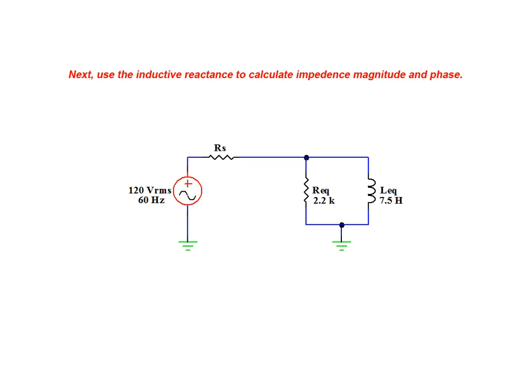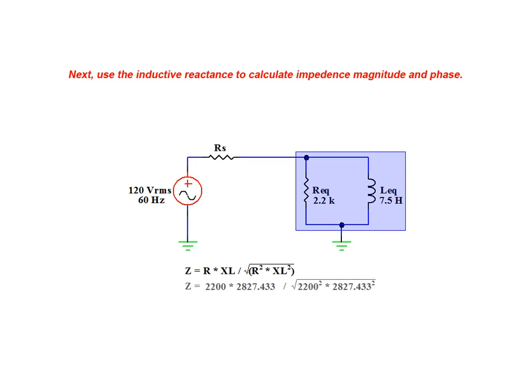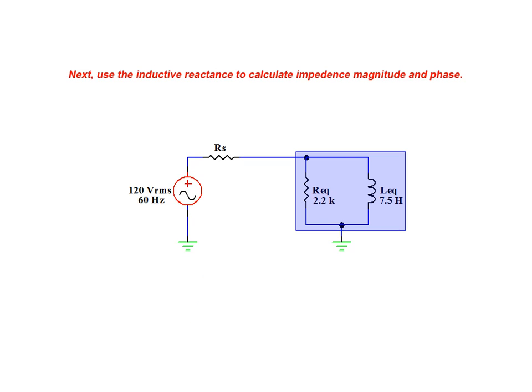Next we use the inductive reactance to calculate the impedance magnitude and phase. We begin with the impedance magnitude. From this calculation we find that the overall impedance of the circuit in an unmodified state is equal to 1736.311 ohms. We now move on to calculate the impedance phase angle. Using the provided resistance and our calculated value for inductive reactance, we arrive at an impedance phase angle equal to 37.886 degrees.